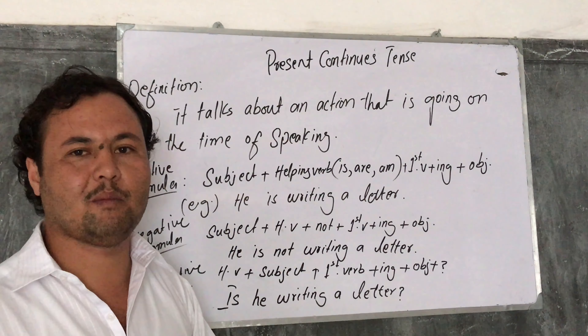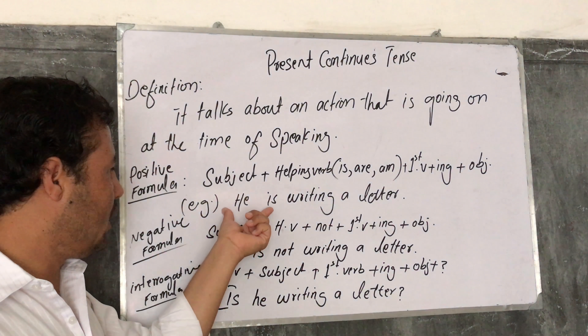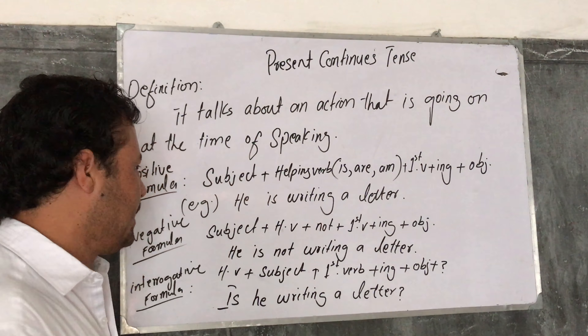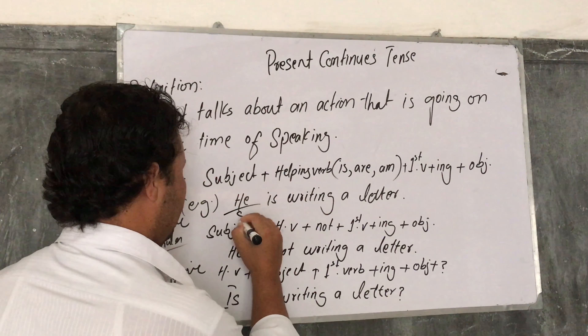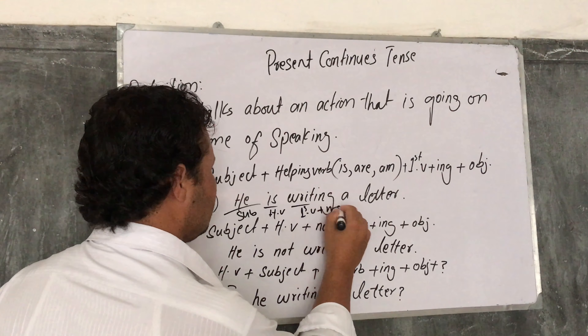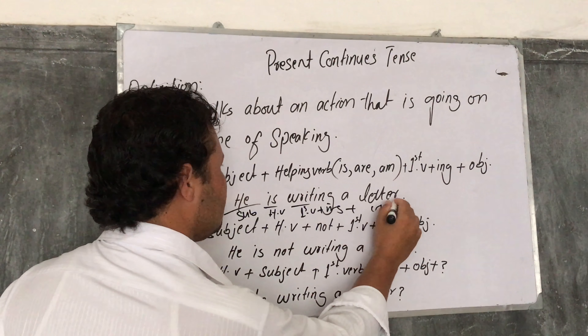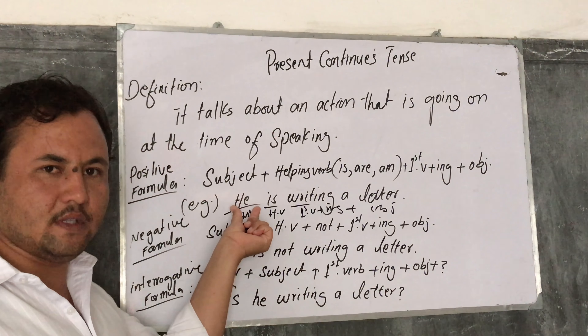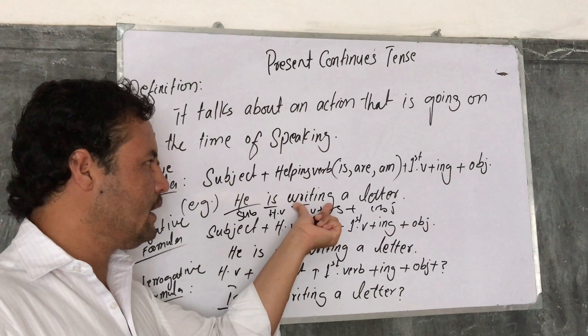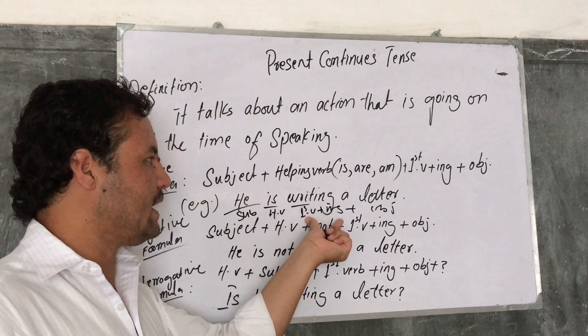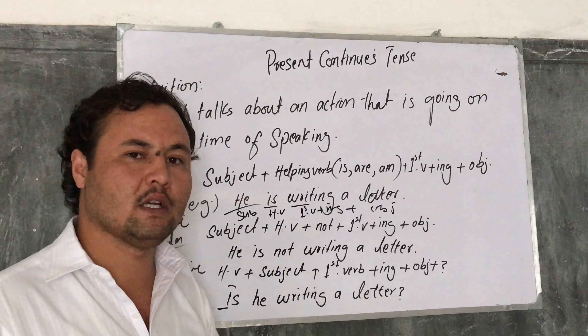There are so many helping verbs. These are the helping verbs of present tense. For example: he is writing. He is the subject of the sentence. Is is the helping verb. Writing — first form plus ING. Article and object is there. He is writing a letter.